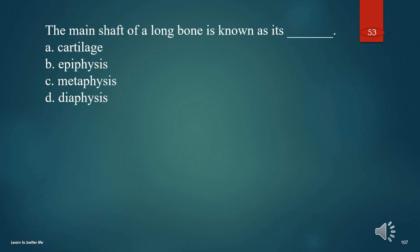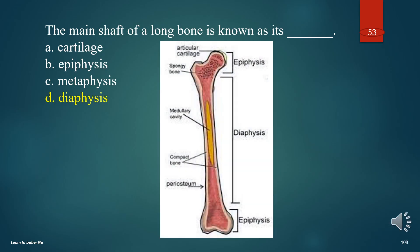The main shaft of a long bone is known as its what? A. Cartilage. B. Epiphysis. C. Metaphysis. D. Diaphysis. The answer is D. Diaphysis.